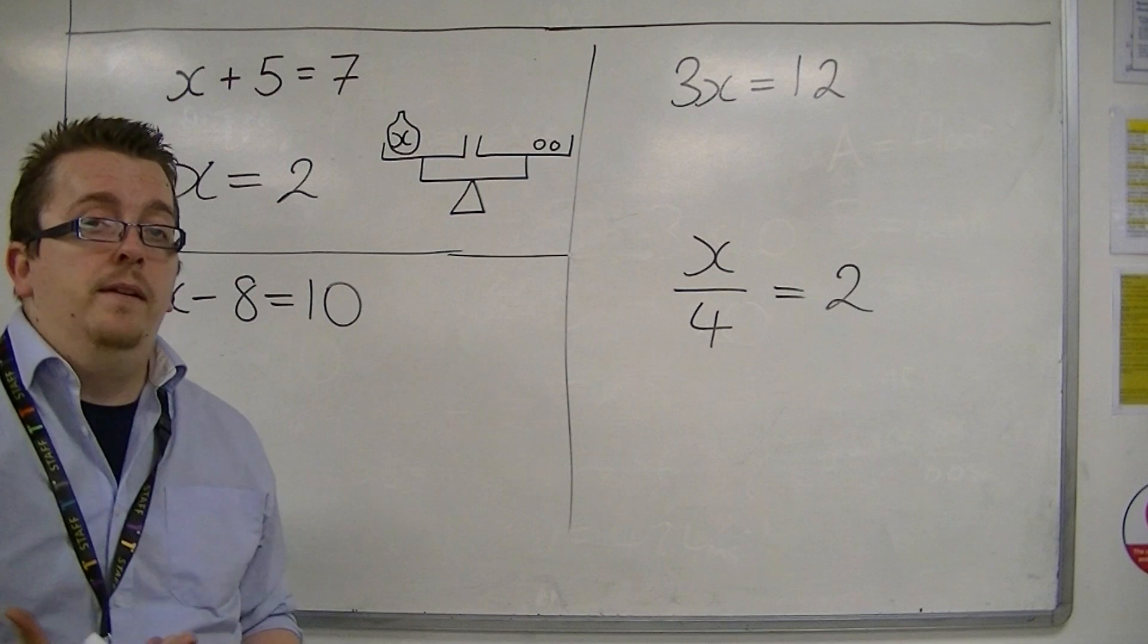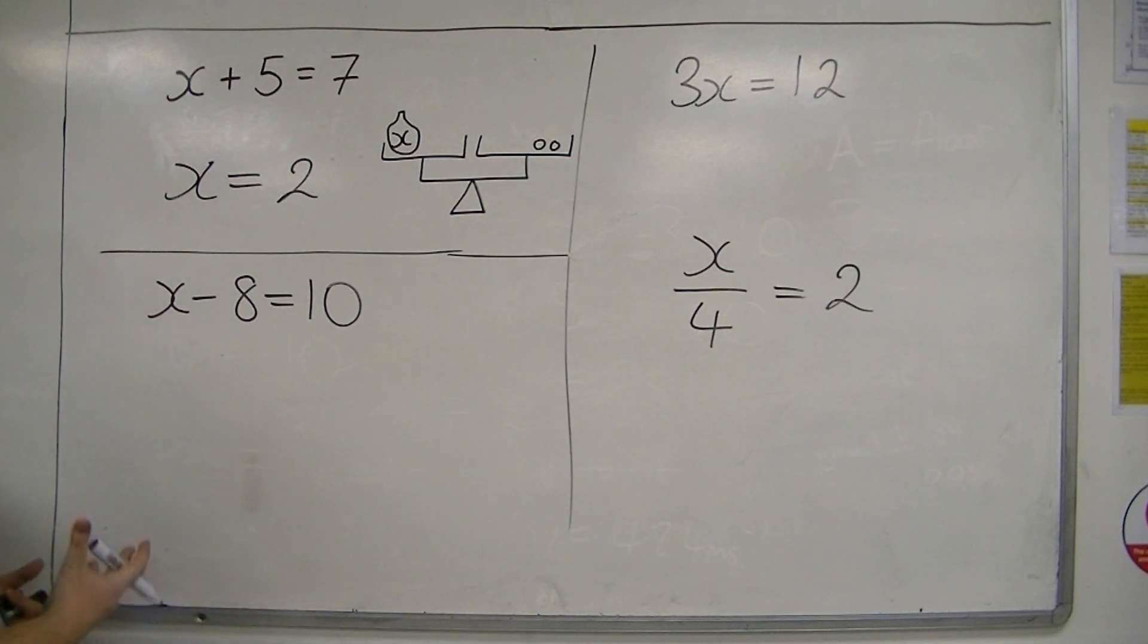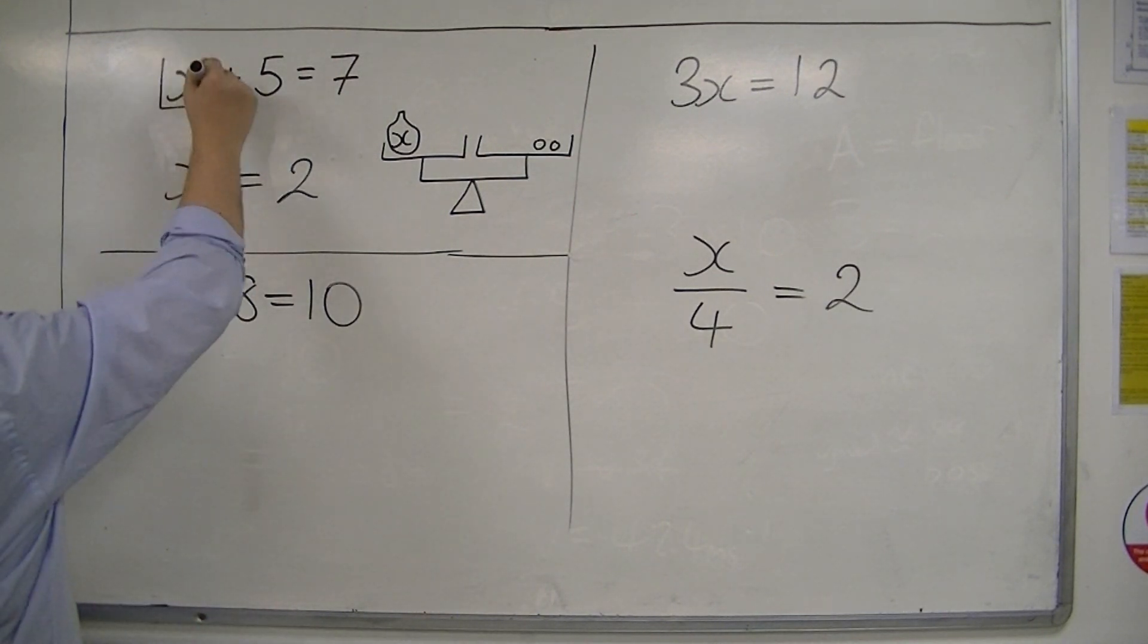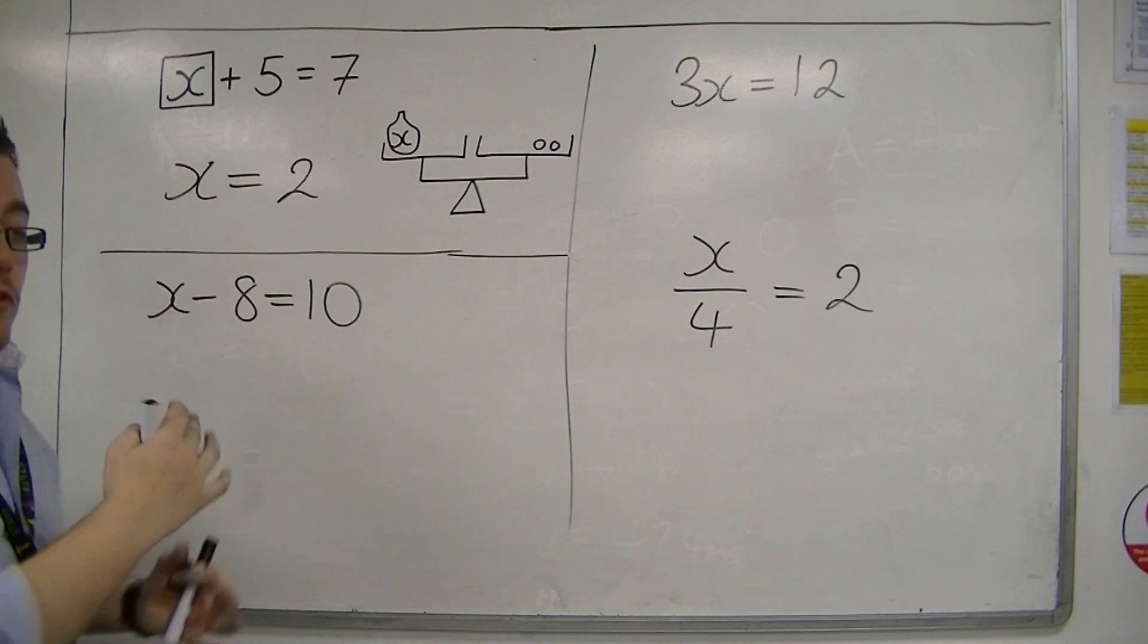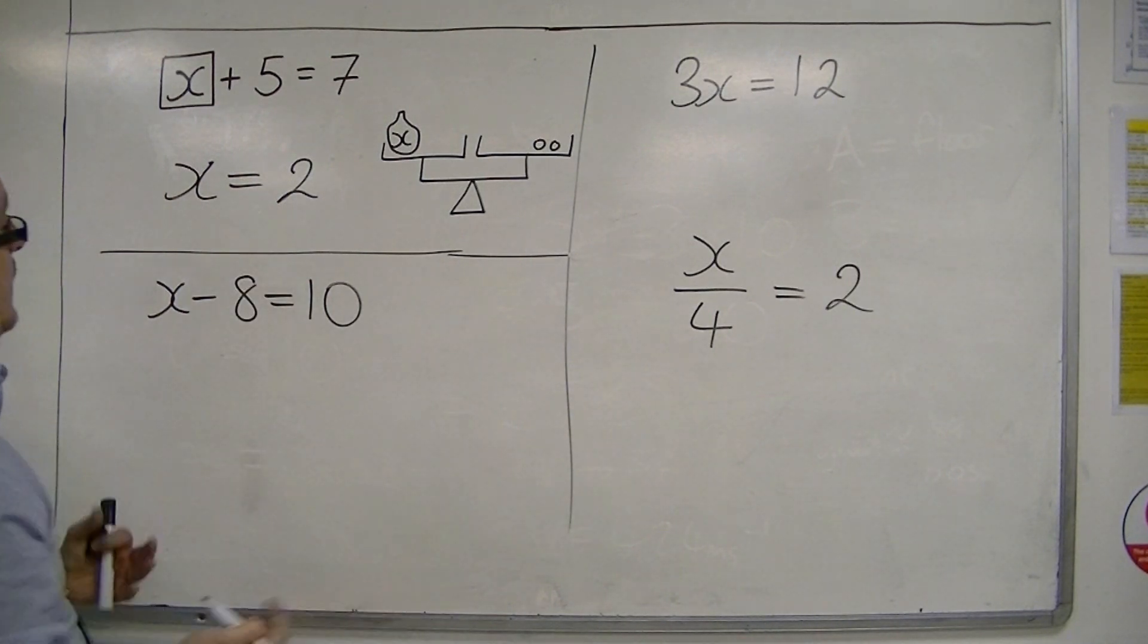Now, if you don't like that, you can also see it as something. So, something in this box plus five is seven. And the only number that could be in that box must be two. You can see it that way.